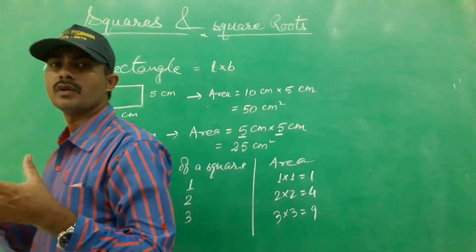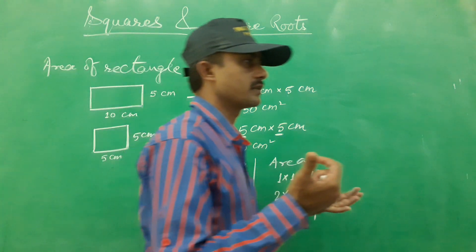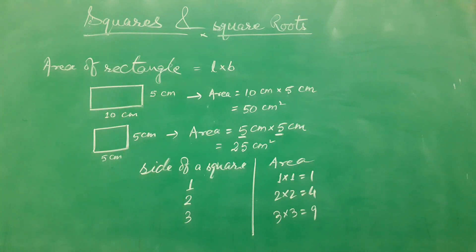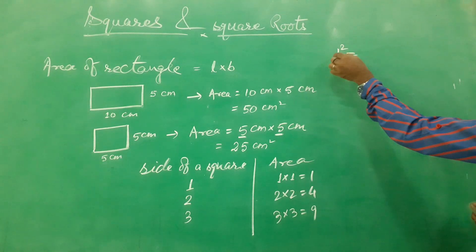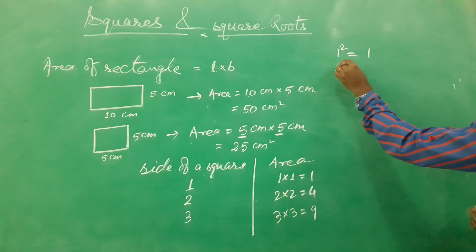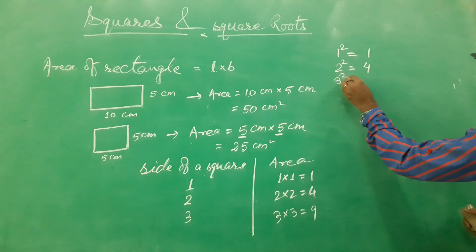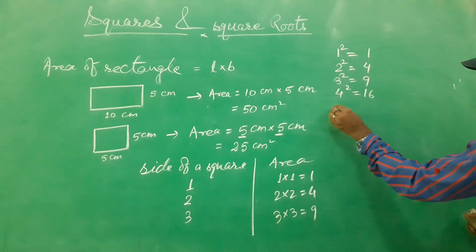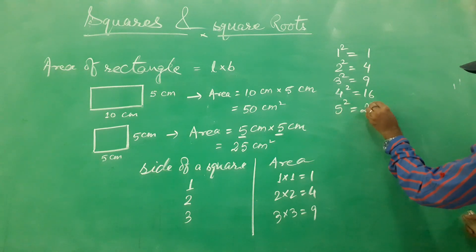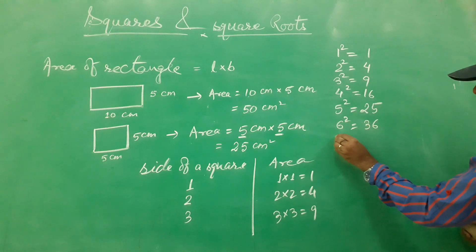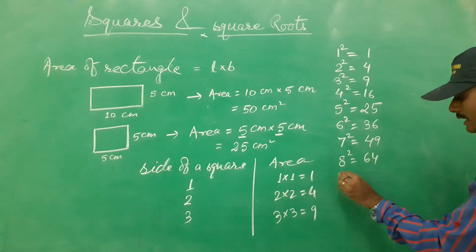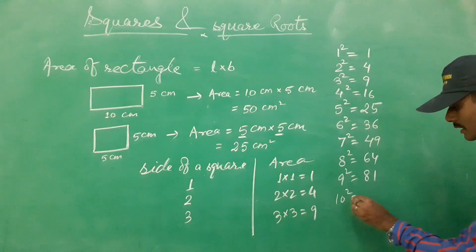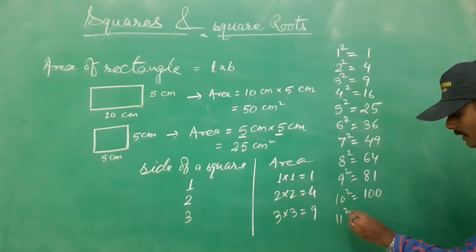Now through this we will try to find properties by looking at many squares. So first: 1 squared is 1, 2 squared is 4, 3 squared is 9, 4 squared is 16, 5 squared is 25, 6 squared is 36, 7 squared is 49, 8 squared is 64, 9 squared is 81, 10 squared is 100. In the same way we can find 11 squared, 12 squared, and many more.